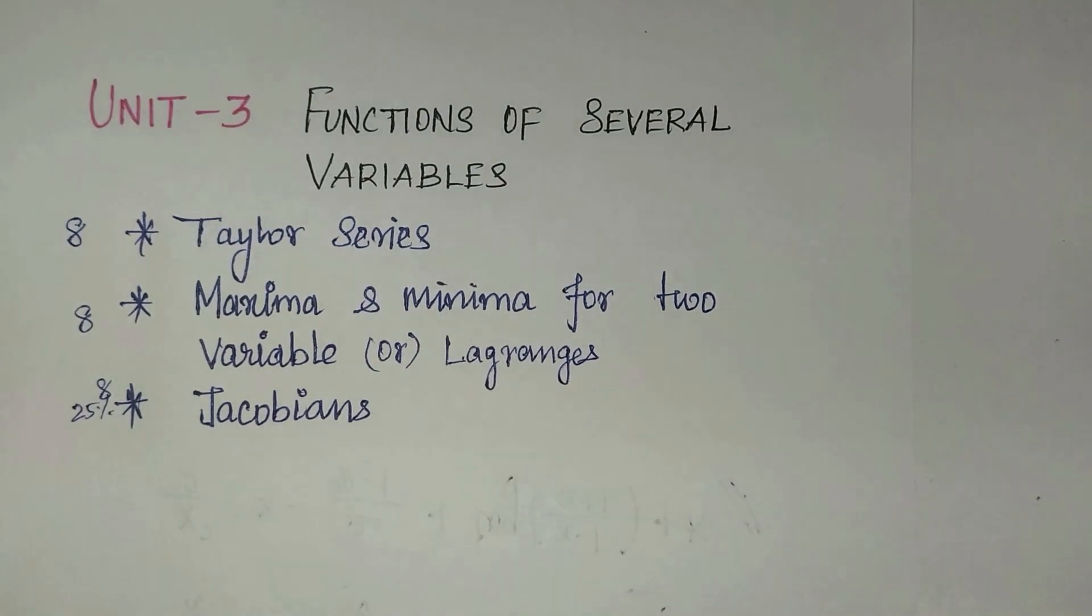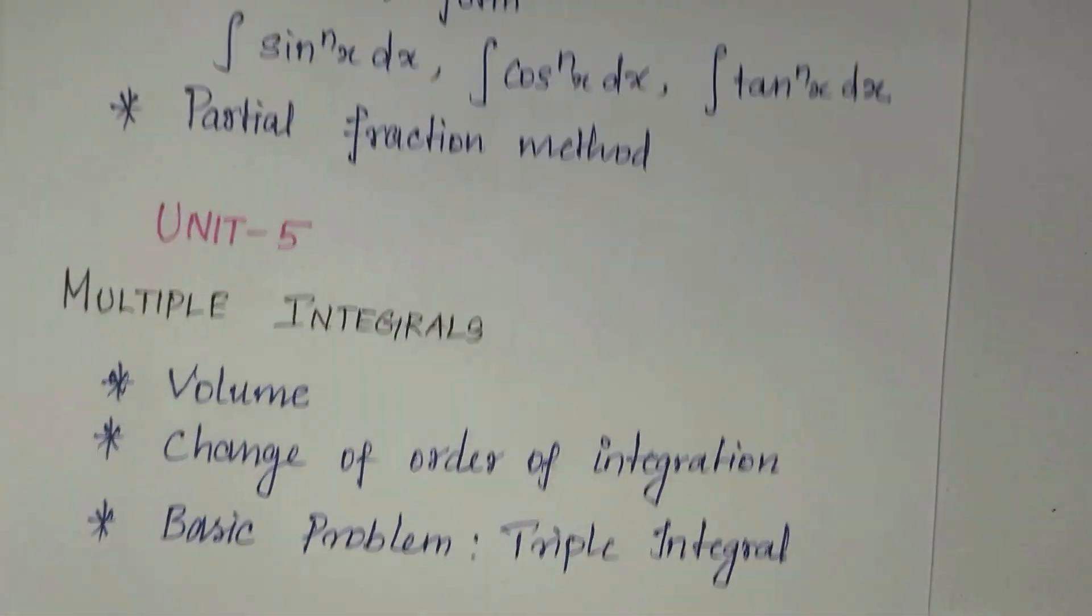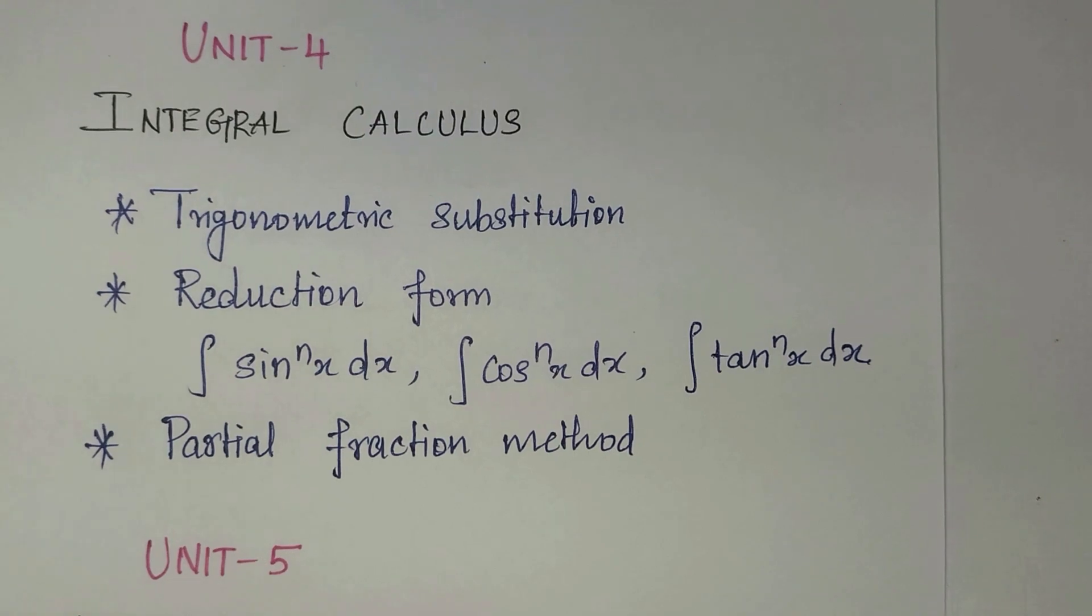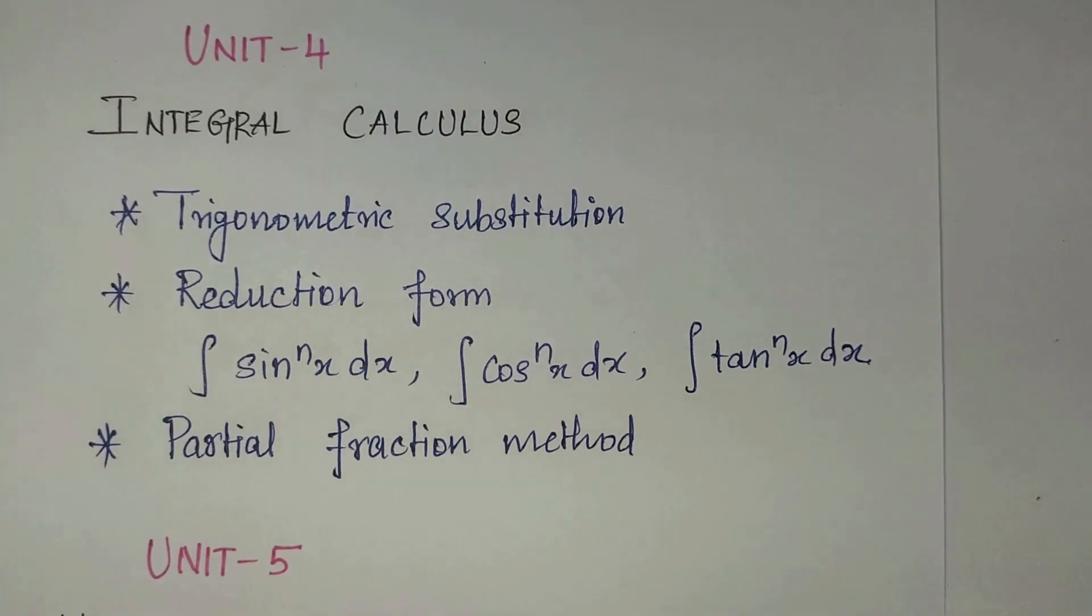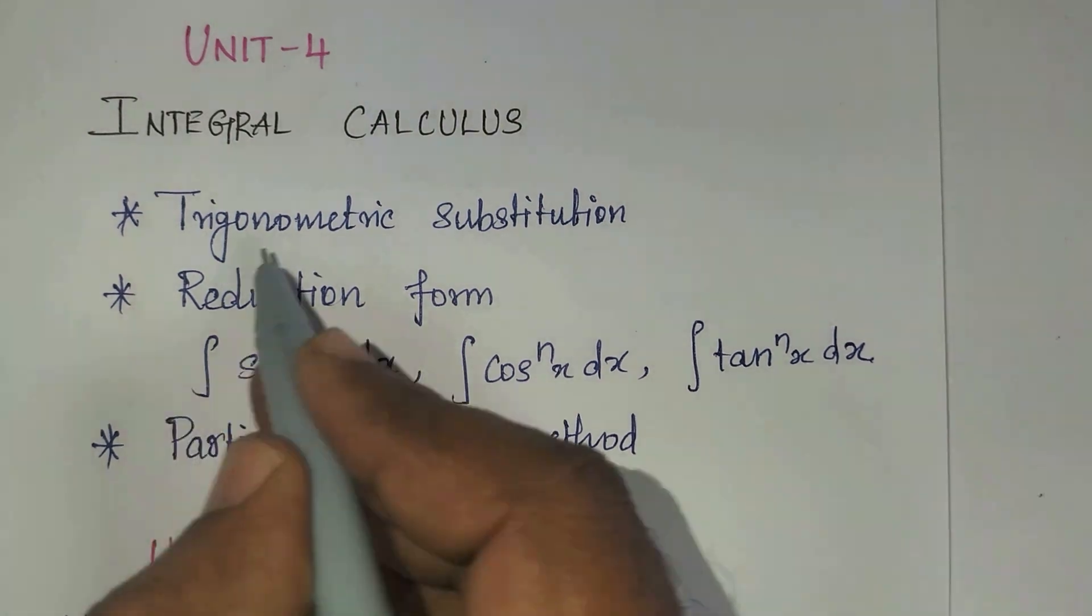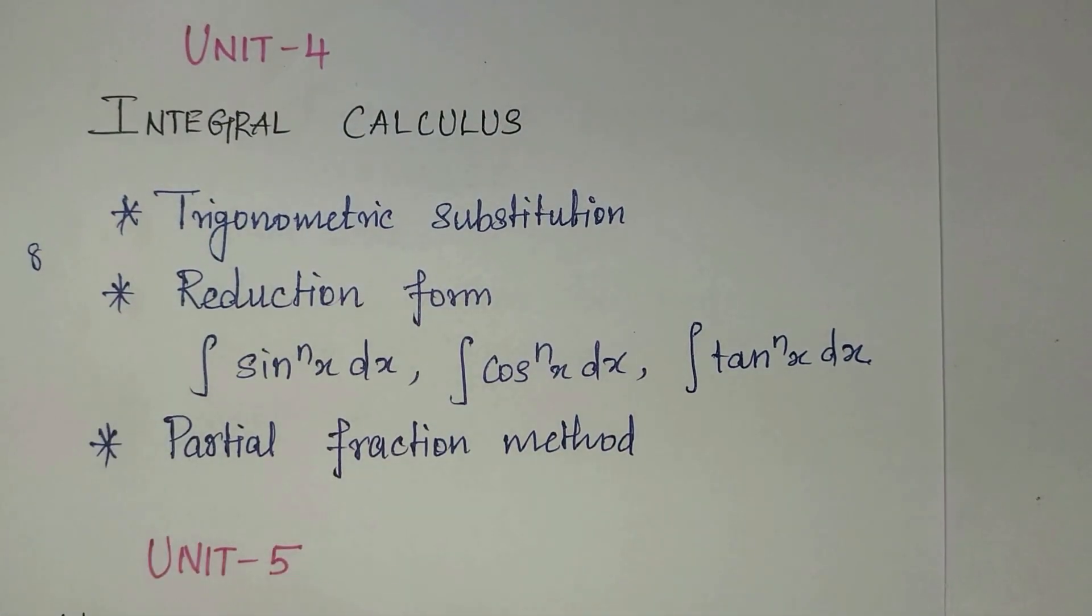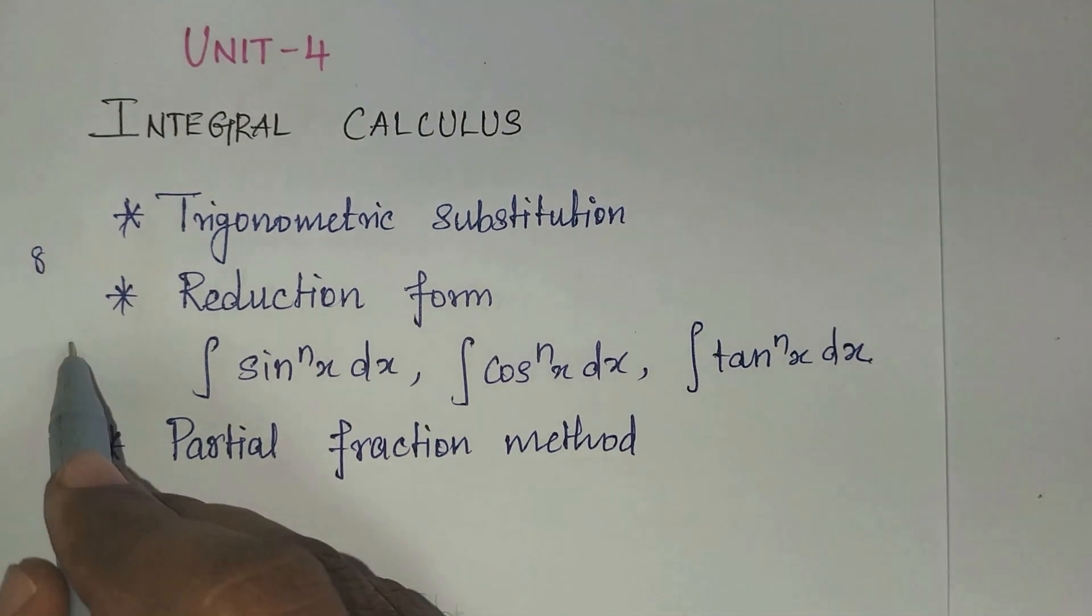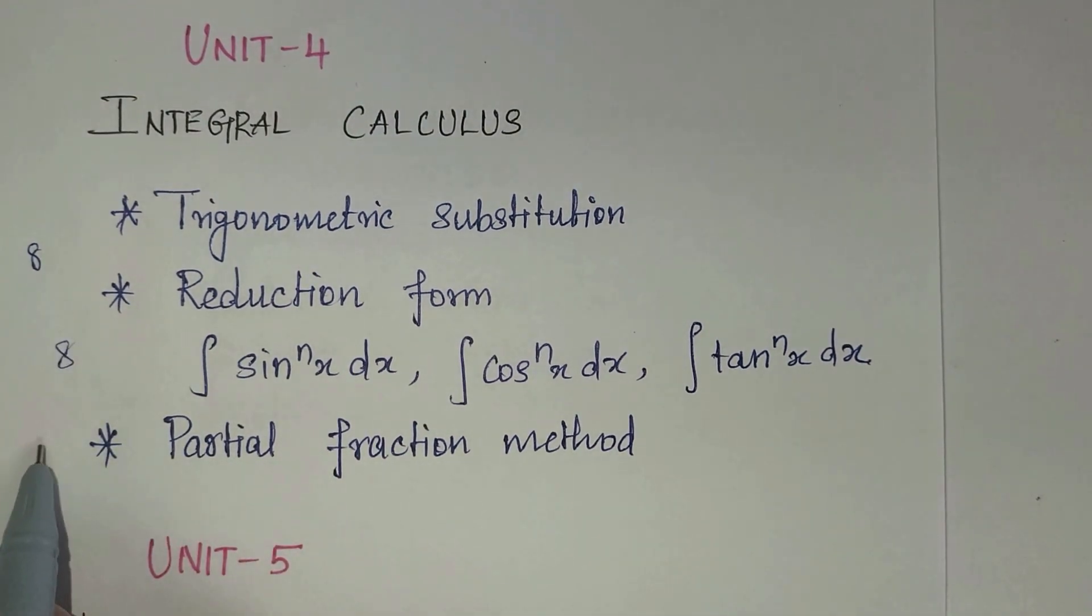When you are writing Units 1, 2, 3, you will get how many marks? 32 marks. And the next, see Unit 4. In this Unit 4, we cannot predict the problems. Why? Because if you don't understand the basic integral concepts, you cannot solve the problem. Very few topics only, maybe the chances are there. Trigonometric substitution they are asking repeatedly, but in different manner. If you are able to understand trigonometric substitution method, now you may get one 8-mark question. Or reduction - these three forms here you will have. According to that, you will get one reduction form, one 8-mark question, and partial fraction, one 8-mark question.